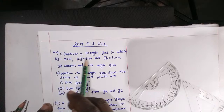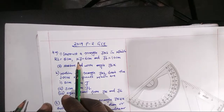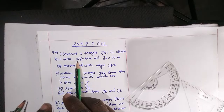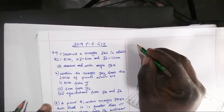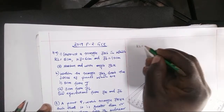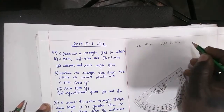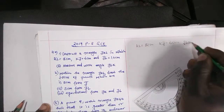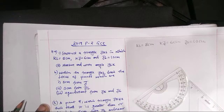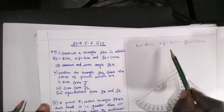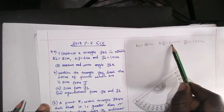Roman numeral one: we are told to construct a triangle JKL in which KL equals 8 centimeters, KJ equals 6 centimeters, and JL equals 10 centimeters. To construct this triangle you must follow the alphabet order, so we start with the length JK which is 6 centimeters.